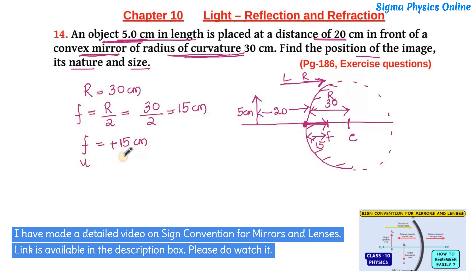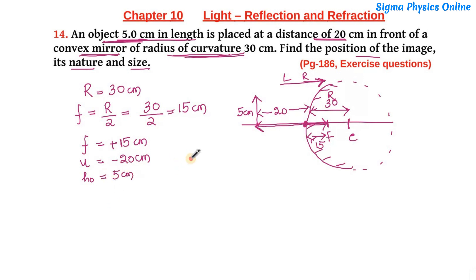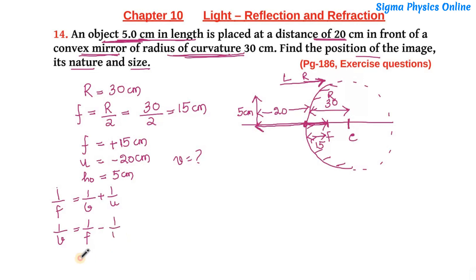The object distance u = −20 cm, because to measure the object distance we go towards the left from the pole, against the direction of light. The height of the object is given as 5 cm. We need to find the image distance v, so we use the mirror formula: 1/f = 1/v + 1/u, which gives 1/v = 1/f − 1/u.